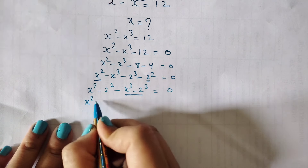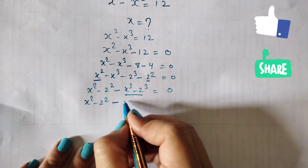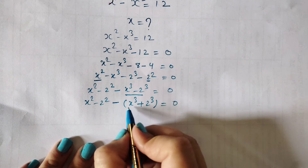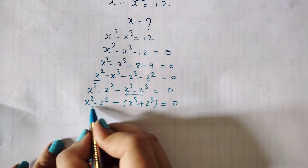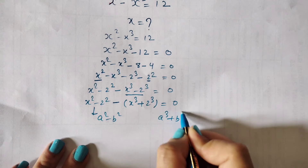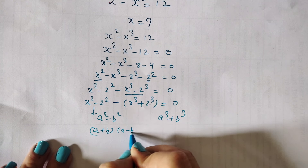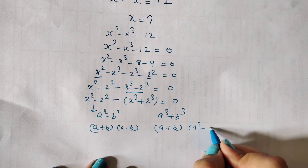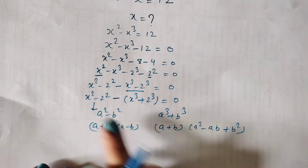For the cubic part, we will factor out a minus sign, giving us minus x cubed plus 2 cubed. With the minus sign factored out, the terms inside become positive. So we are using two identities here: a squared minus b squared and a cubed plus b cubed. The a squared minus b squared identity gives (a + b)(a − b), and the a cubed plus b cubed identity gives (a + b)(a squared minus ab plus b squared).